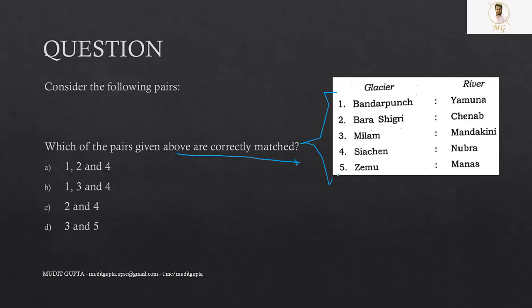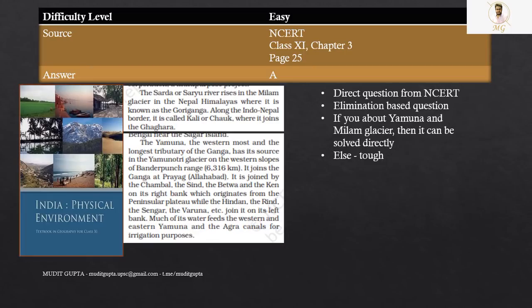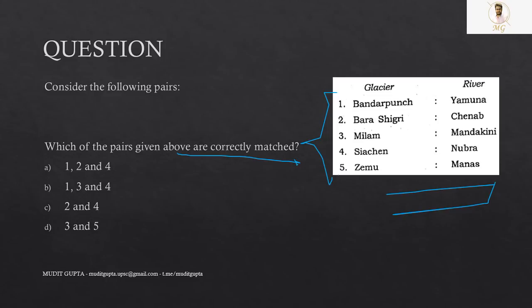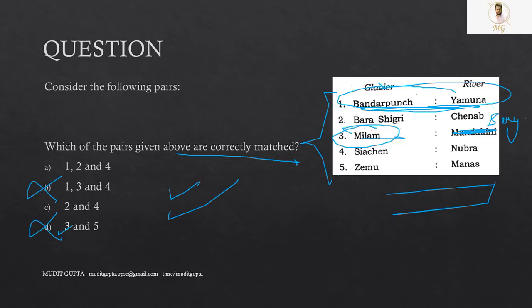Which of the following pairs are correctly matched rivers and their glaciers? This question again, an extremely easy question that can be solved from this particular NCERT. That is class 11th NCERT chapter 3, page number 25. On that, there are glaciers and their rivers are given. So again, direct question from NCERTs. Yamuna originates from Bandarpunch, absolutely right. But as far as Milam Glacier is concerned, it is Gori River. Gori River that originates from Milam Glacier. So third is incorrect. B is gone, D is gone. Now one is absolutely correct as per NCERT. So A is the answer. One is correct as per NCERT. So like this, it becomes an extremely easy question directly from NCERT.